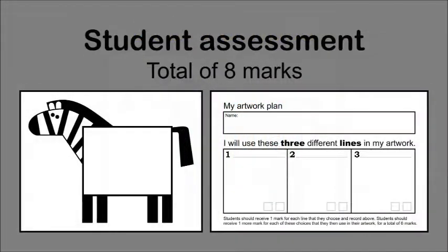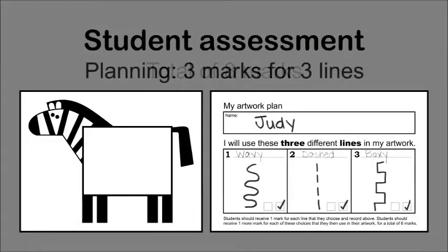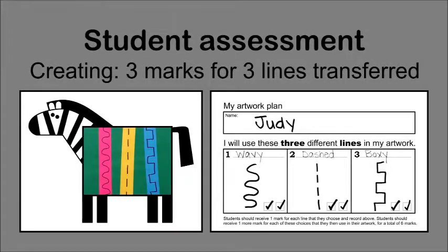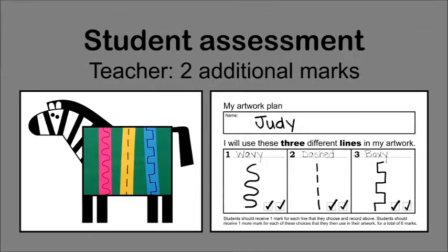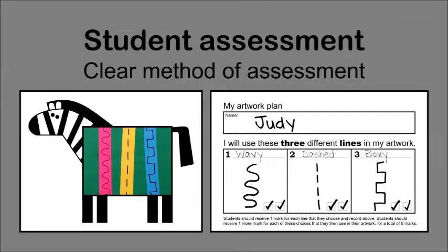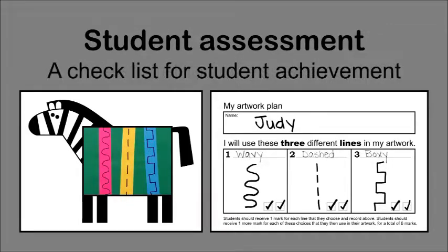Students could achieve a total of eight marks for this project: three marks for choosing three lines at the planning stage, three marks for transferring their choices to their artwork, and two additional marks for impressing their teacher. Considerations might include neatness, good work habits, or additional creativity. The planning sheet helps to make the method of assessment clear to students, teachers, and parents. In turn, students could use their planning sheet as a checklist for success.